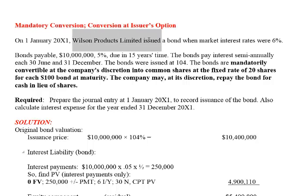In this case, we have Wilson Products Limited, which at the beginning of X1 decided to issue a bond that was convertible when the market rate was 6%. The bonds are $10 million in face value, the coupon is 5%, they are due in 15 years with semi-annual interest payments each June 30th and December 31st. The bonds were issued at $104, which means the investors gave 4% over and above the par value. The bonds are mandatorily convertible at the company's discretion into common shares, and each $100 bond would be given 20 common shares upon conversion. The company may, at its discretion, repay the bond for cash in lieu of shares.